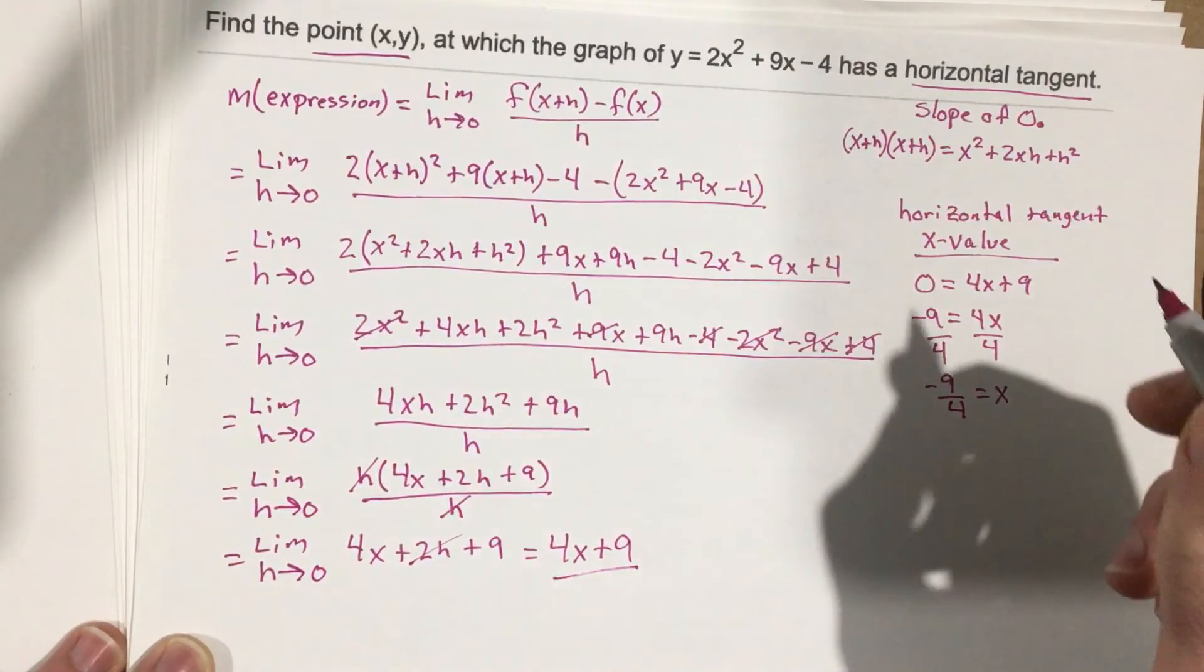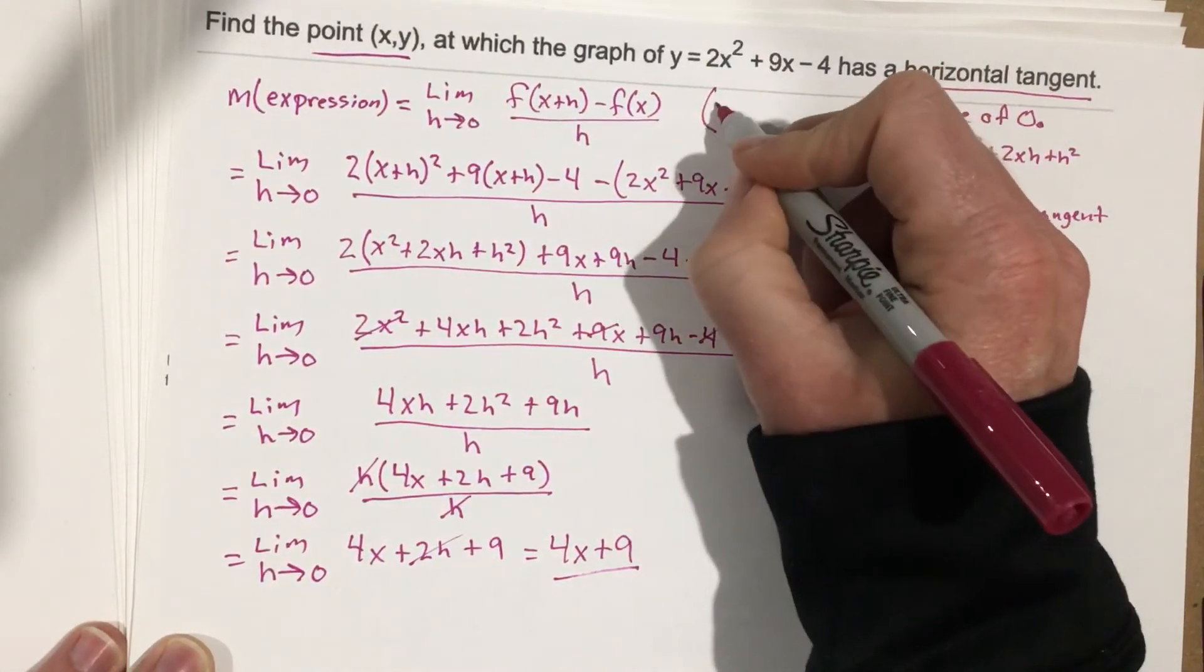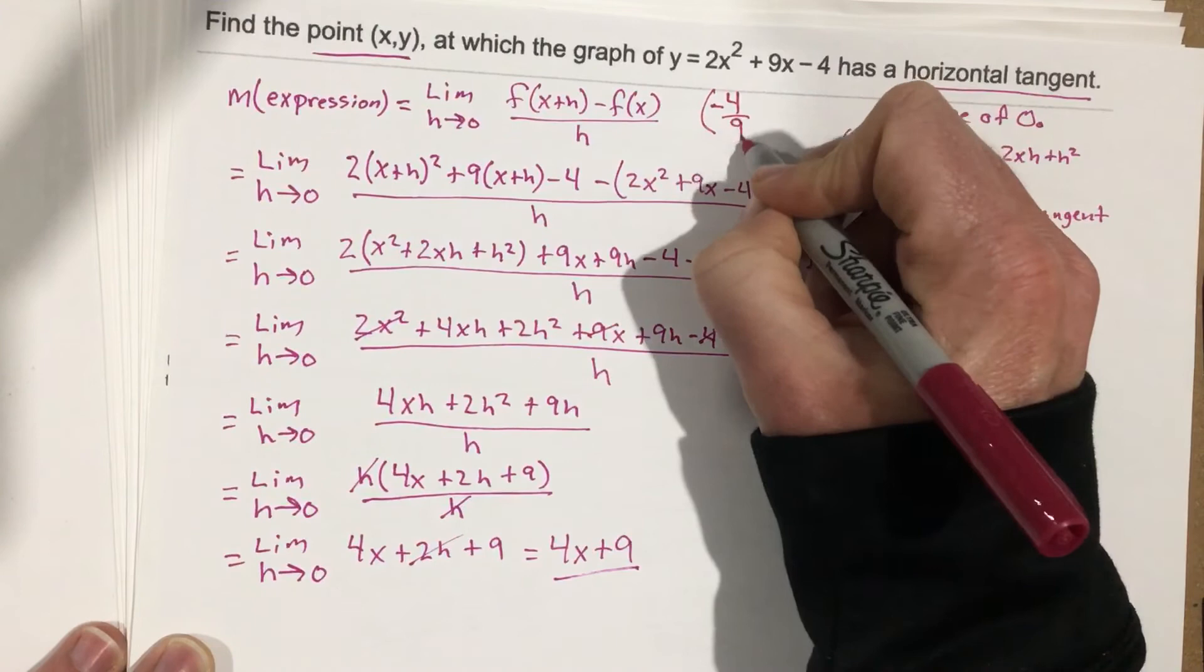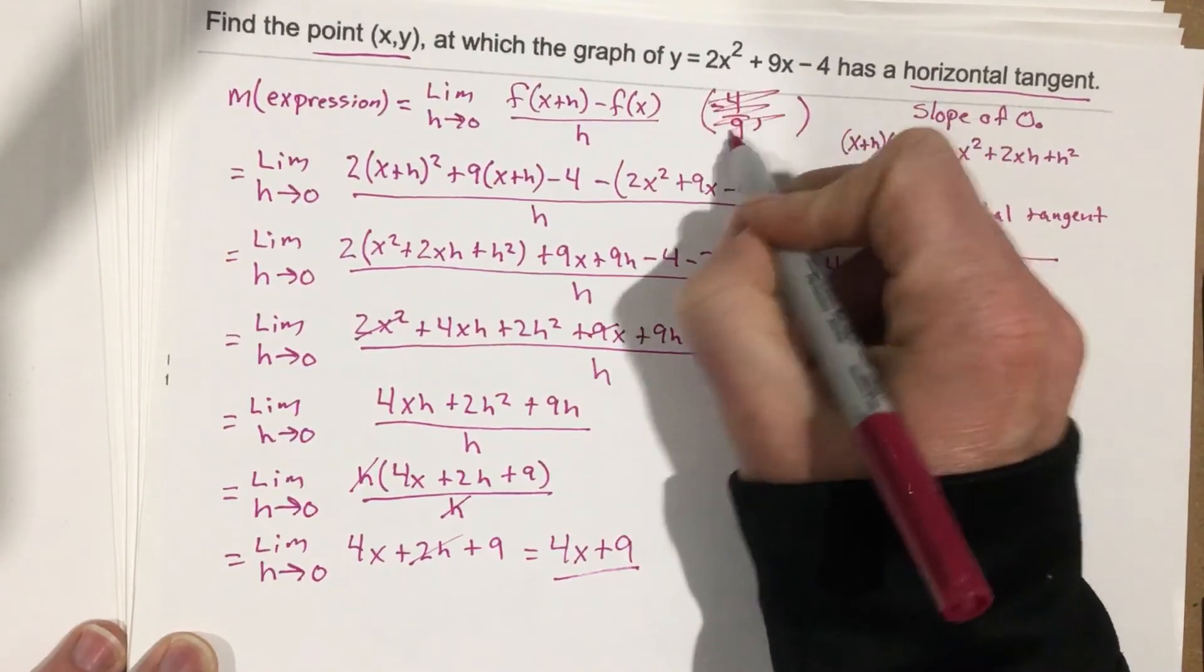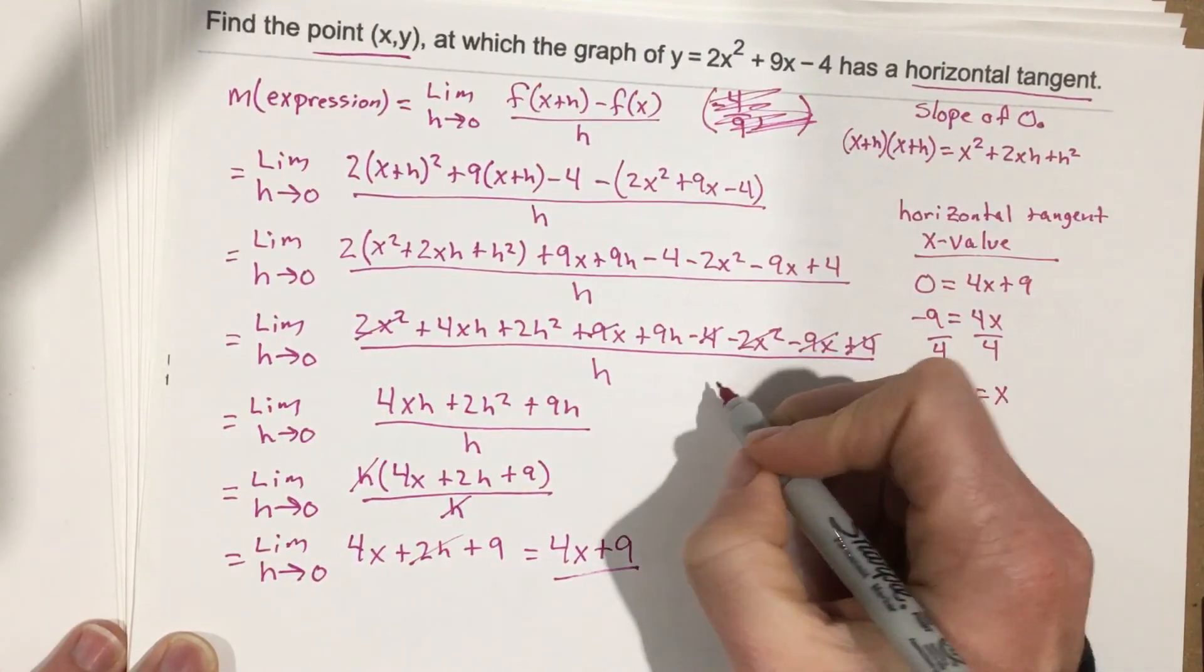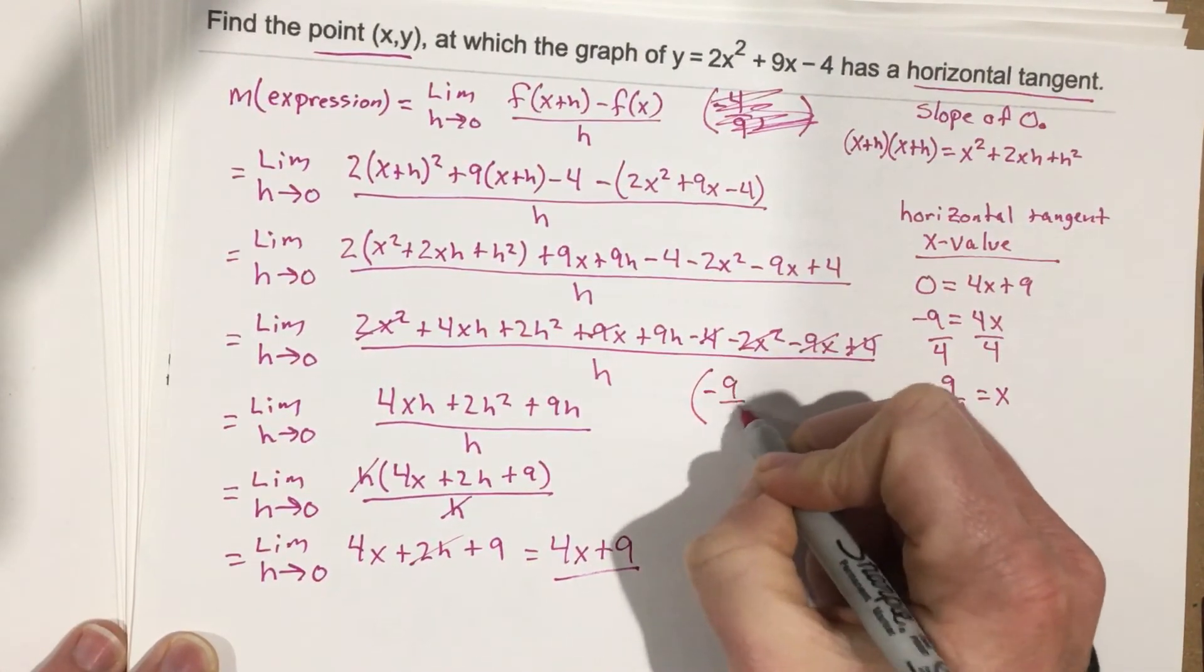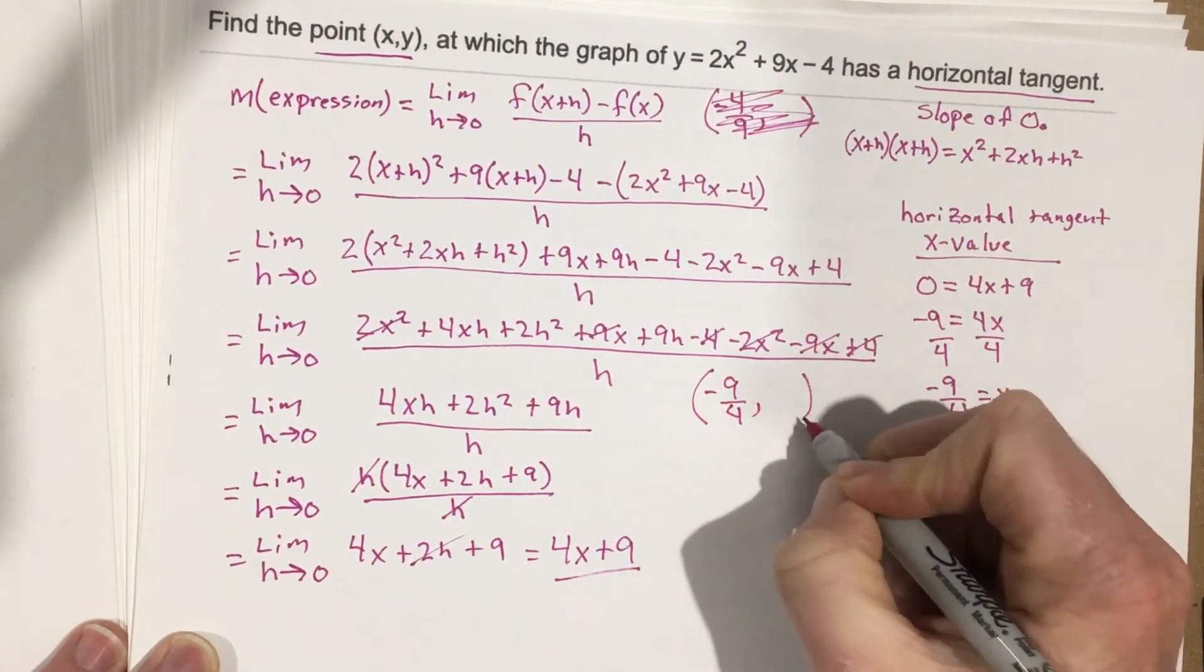So we can say that our coordinate, we'll just write it here, this is negative 4 ninths, comma, some number there. Negative 9, negative 4 ninths, I'm going to cross that out. It's negative 9 fourths. Negative 9 over 4, comma, some number here.